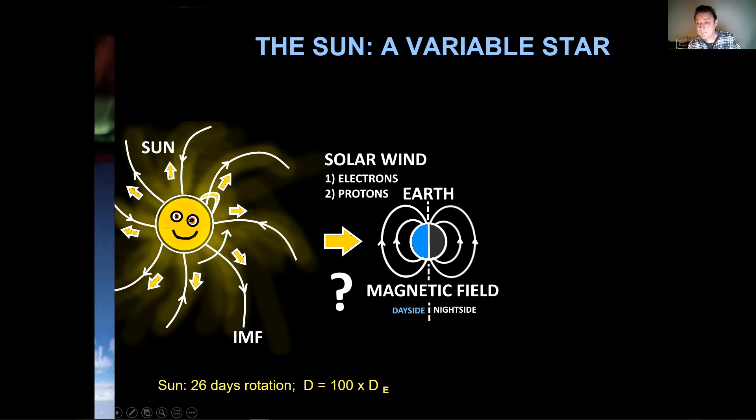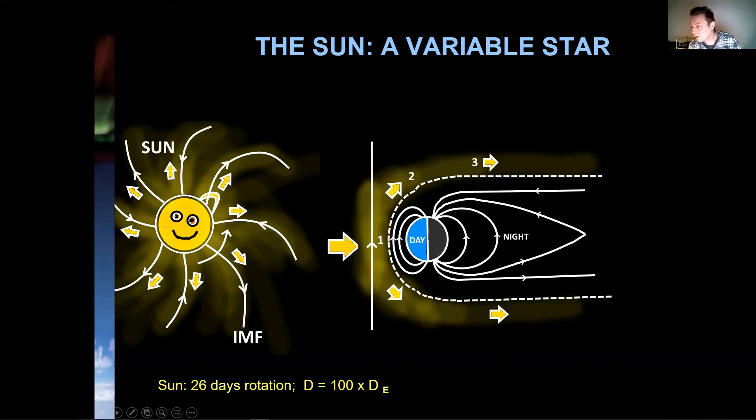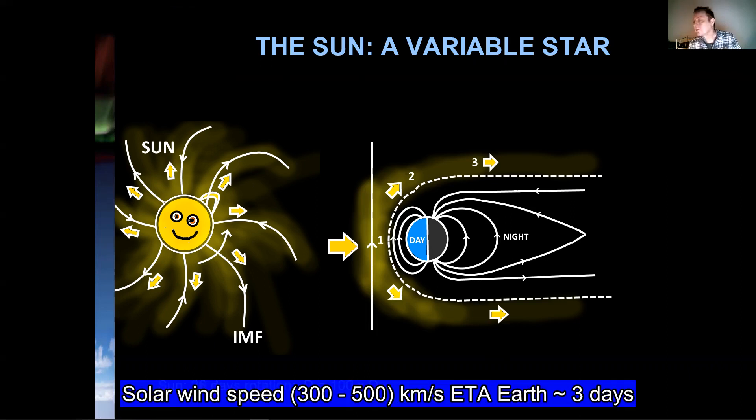Luckily, Earth also has a magnetic field formed like a dipole. So here we have the day side and here is the night side. When the solar wind arrives, it's important to notice the direction of the solar magnetic field.